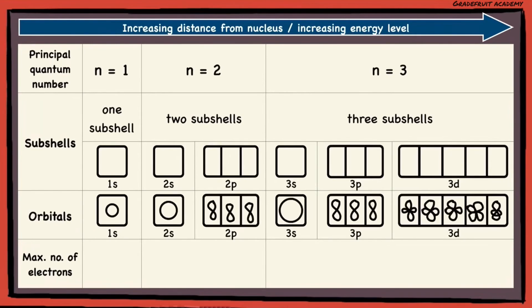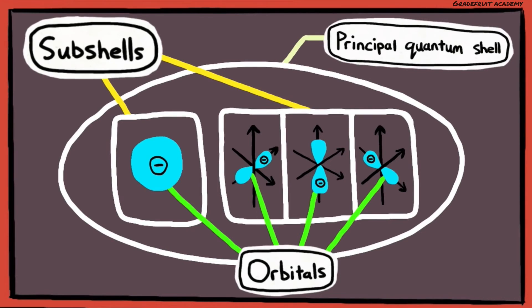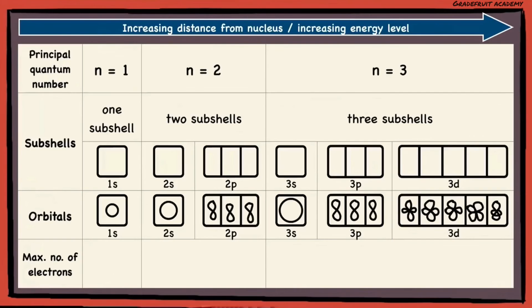So at a glance, these are how the orbitals will look like, and how they are related to the subshells and principal quantum shells. Now remember I said that each of these orbitals can contain up to a maximum of 2 electrons? So for the first principal quantum shell, the maximum number of electrons is only 2.